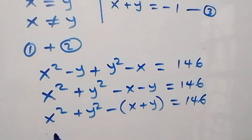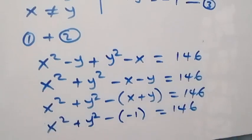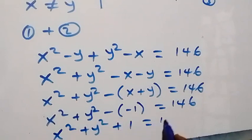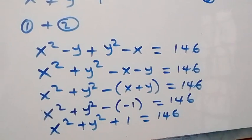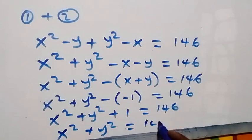That equals to 146. Since from equation 3, x plus y is minus 1, we substitute minus 1 here, which gives x squared plus y squared minus times minus 1. The minus and minus make plus, so we have x squared plus y squared plus 1 equals to 146. Taking 1 to the other side gives x squared plus y squared equals to 145, and we label this as equation 4.